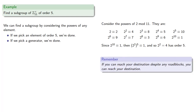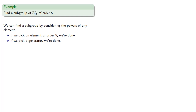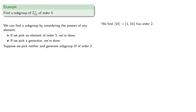But again, if you can reach your destination despite any roadblocks, you can reach your destination. So suppose we don't pick a generator. If we pick neither an element of order 5 nor a generator, and generate a subgroup H, the only other possible order is 2. We find that element 10 generates the subgroup {1, 10}, which has order 2. Since the subgroup has order 2, there must be 5 cosets, so our quotient group has to have order 5.